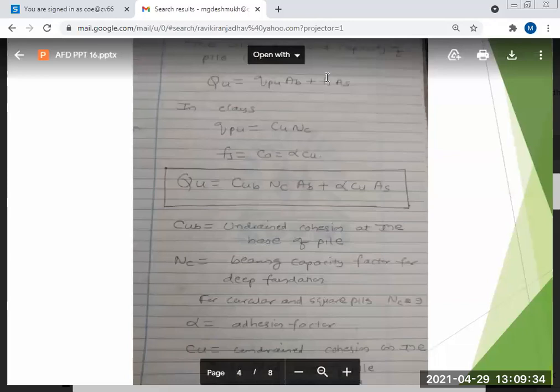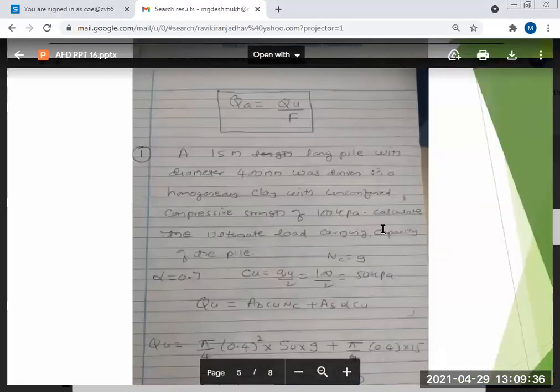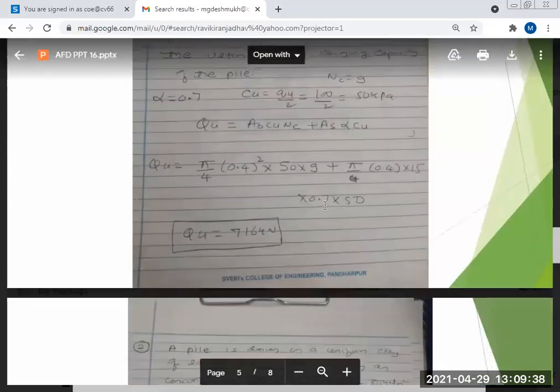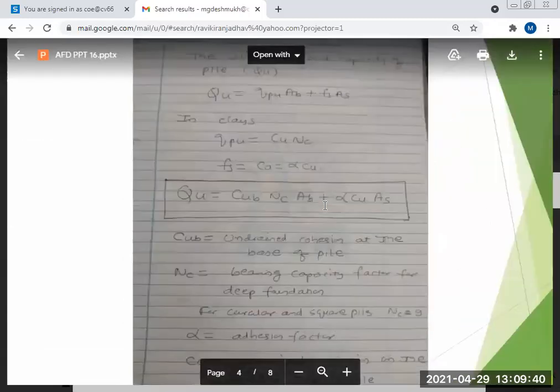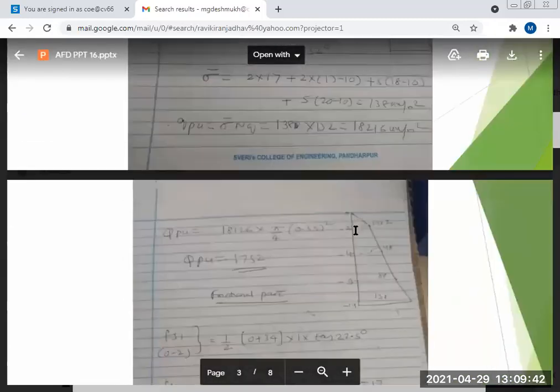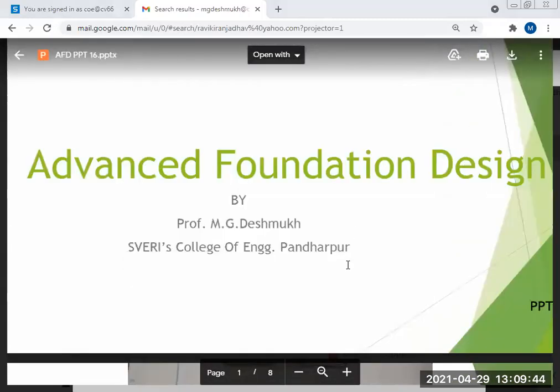Sometimes instead of C, unconfined compression strength is given. Sometimes in place of C, qf is given then C is equal to qf by 2. So use this formula and solve the problems which I did already. This I will share with you, all the things are there, you have to substitute it.